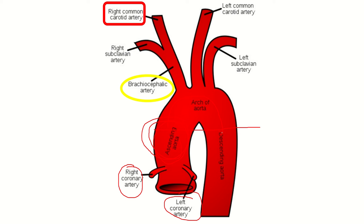After arching, the aorta continues as the descending thoracic aorta and descends through the posterior mediastinum in the thorax, leaving through the opening in the diaphragm at the level of the T12 vertebra.